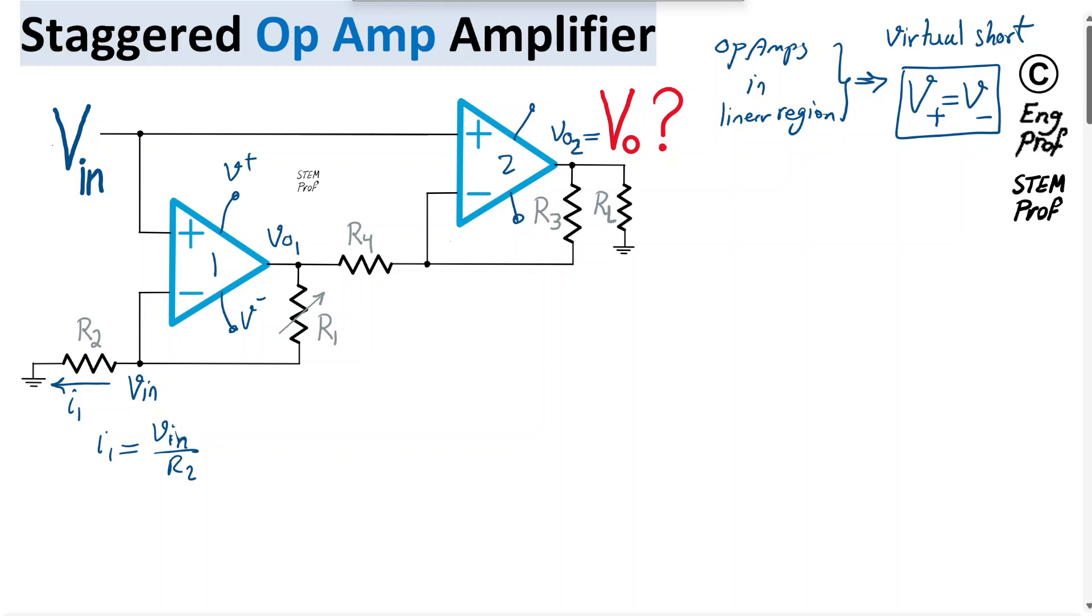This current can only flow through R1. There is no other route for this current because the input impedance of the input terminal of ideal op-amp is practically infinite. So there is no current going through the input terminal. A KCL here, or Kirchhoff current law, indicates that the incoming current should be equal to outgoing current.